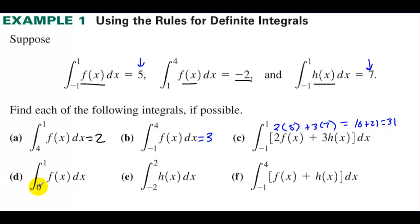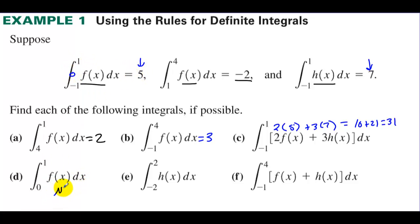Letter D: integrating from 0 to 1 of f(x). They want you to think that if you integrate from negative 1 to 1 is 5, then 0 to 1 must be half of that. But that is not true — not enough information.